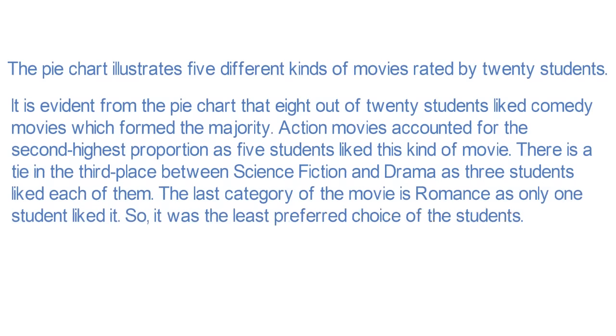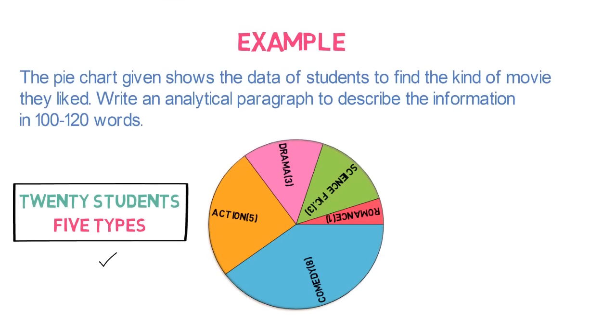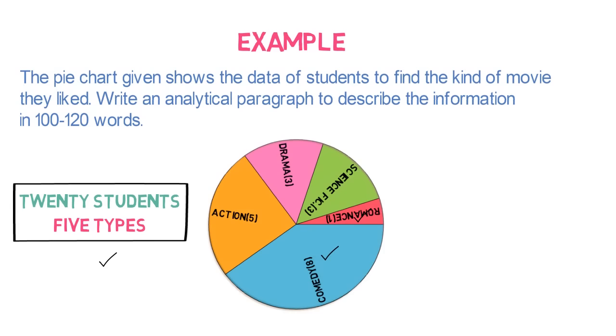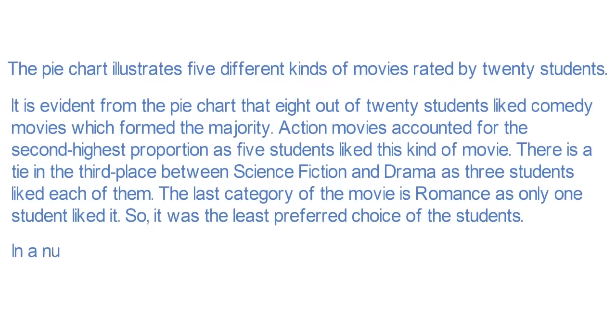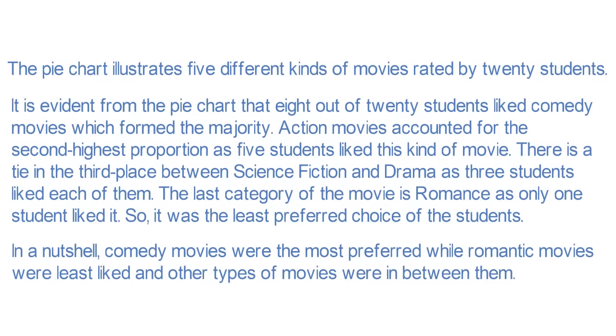Finally, comes the conclusion. Here, we will conclude the data in the chart by highlighting the most liked and disliked type of movies. So, the conclusion will look like this: In a nutshell, comedy movies were the most preferred while romantic movies were least liked and the other types of movies were in between them. Pause the video and try to analyze this analytical paragraph writing.